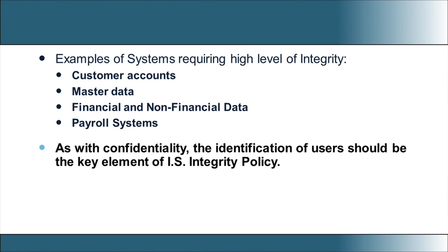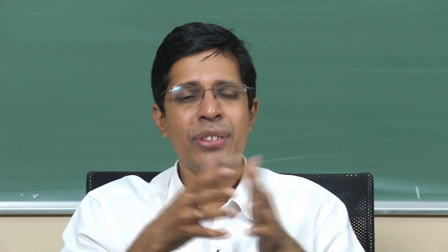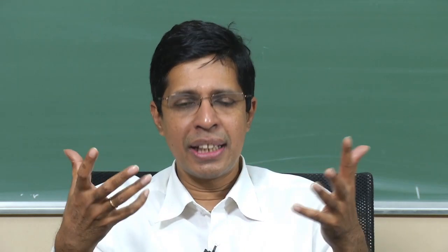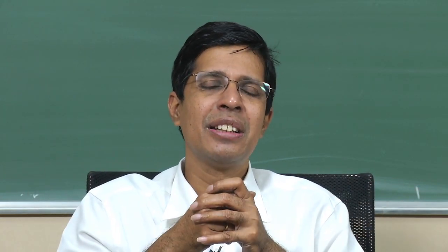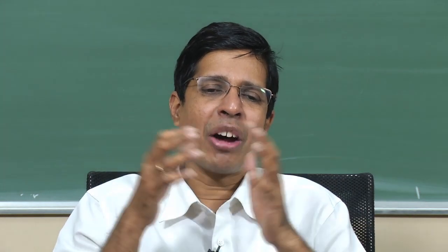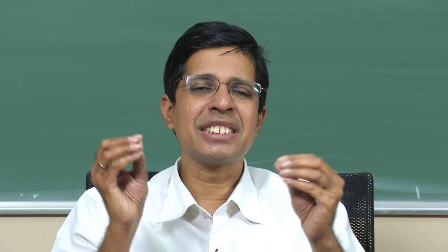How do we ensure integrity? The first thing is to identify the user. We have the process of identification, authentication, and then authorization — all that we did for confidentiality needs to be done here. A user identifies himself through a login, then there is a password, then authentication happens. Then there is authorization, and based on this authorization, he can perform certain consistent actions on the data.